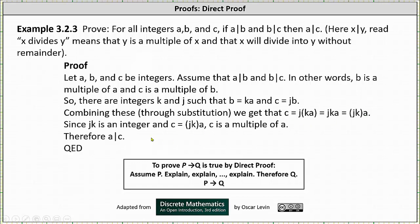Since J times K is an integer and C is equal to the product of J and K times A, C is a multiple of A. And this is what we needed to show, therefore A divides C and the proof is complete.